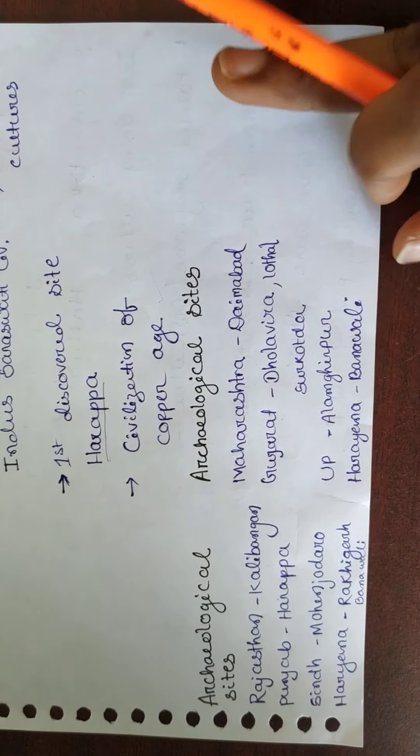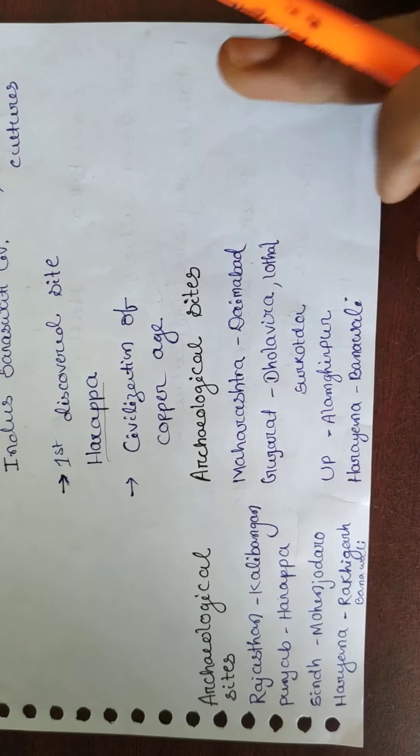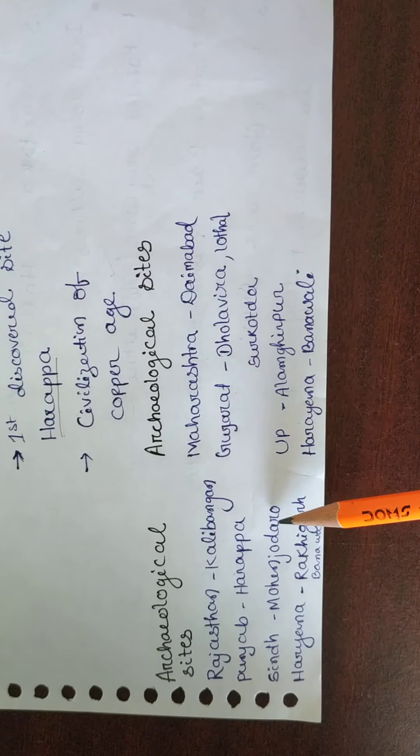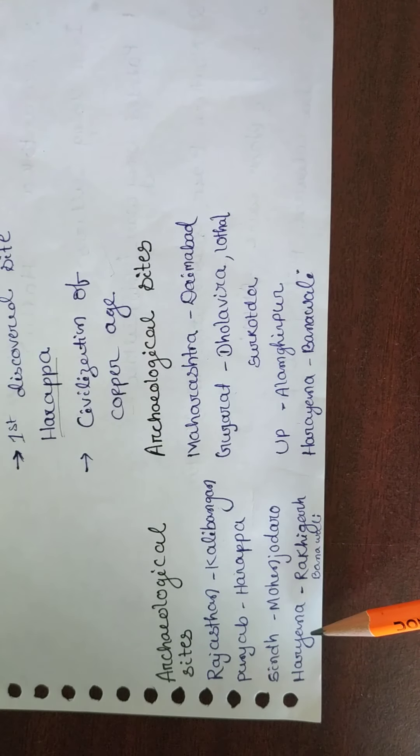Now we have to remember some archaeological sites. Kalibangan is in Rajasthan, Harappa in Punjab, Mohenjo-daro in Sindh, Rakhigarhi and Banwali in Haryana, Daimabad in Maharashtra, Dholavira, Lothal, and Sutkotada in Gujarat, Alamgirpur in Uttar Pradesh, and Banwali in Haryana. In Post-Harappan and Pre-Harappan, not much is covered, so we focus mainly on the Harappan Age.